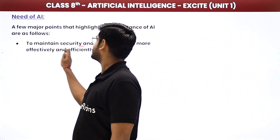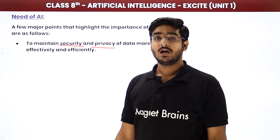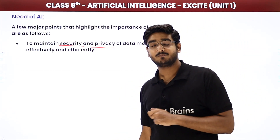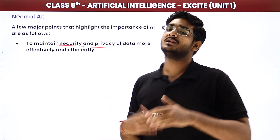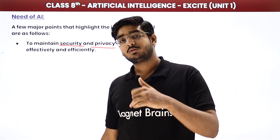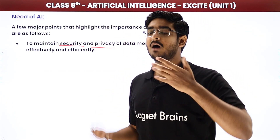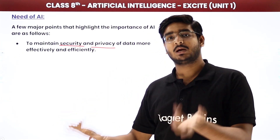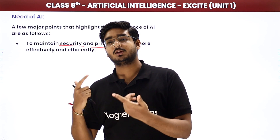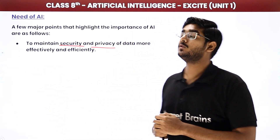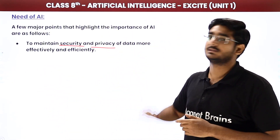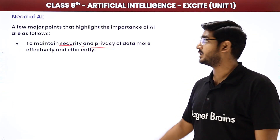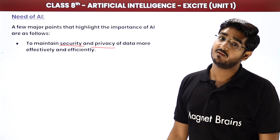Where security or privacy is concerned, we must be strict. As human beings, we are driven by emotions and cannot always maintain strict privacy — which can lead to security breaches, and we become responsible for those breaches. In such situations, AI can maintain security and privacy more effectively and efficiently. An AI-powered device or system can provide us with security and privacy that humans may fail to maintain.